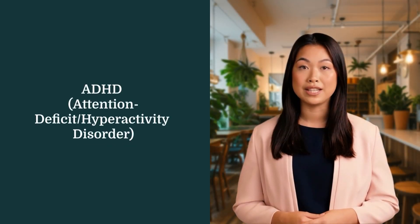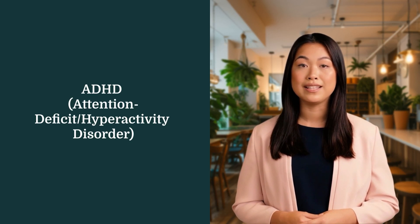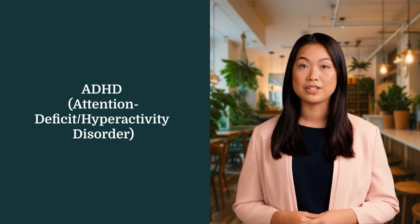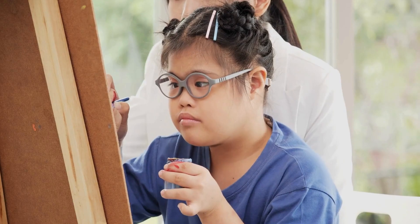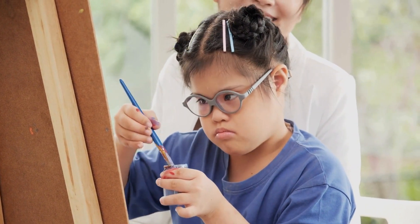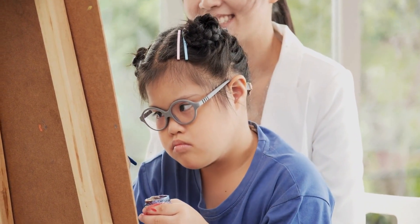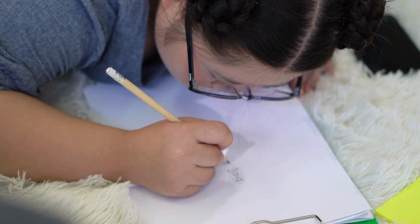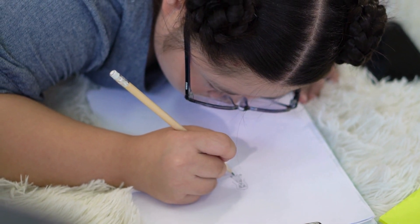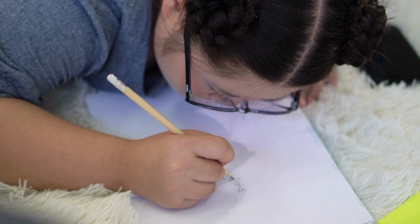Let's start with ADHD, which is common in autistic children. ADHD affects their ability to focus, stay organized, and manage their impulses. You might notice that your child finds it difficult to sit still, follow directions, or complete tasks. These symptoms can make daily routines, such as getting ready for school or completing homework, more challenging. Children with both autism and ADHD may become easily frustrated when tasks feel overwhelming or confusing.